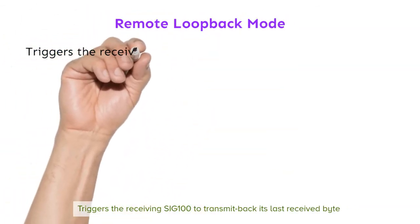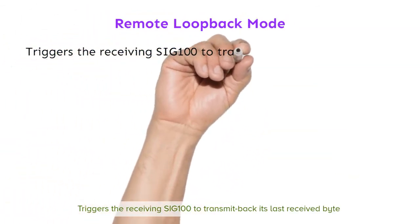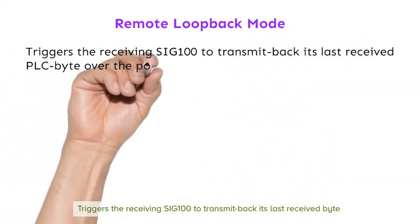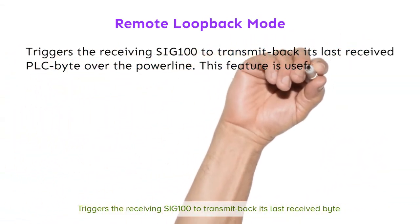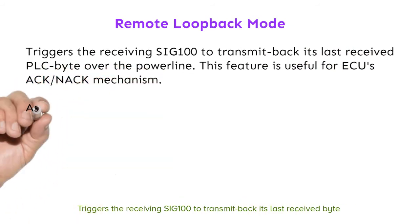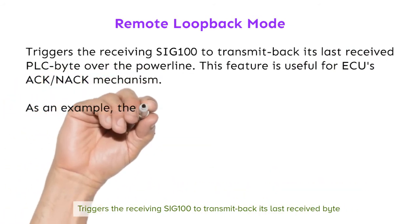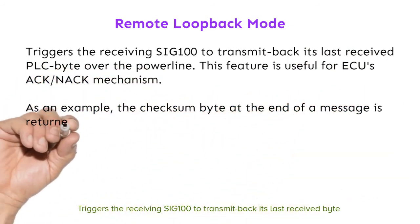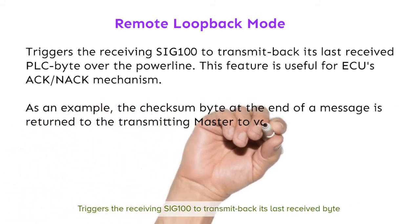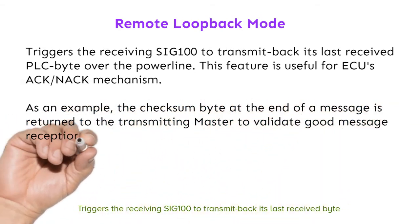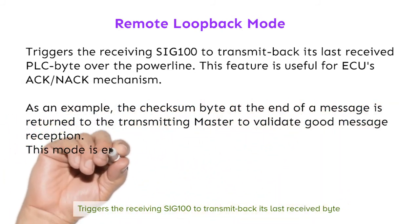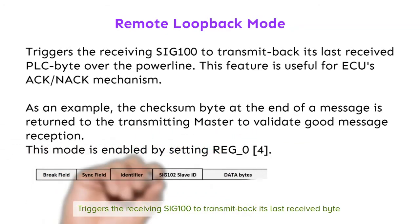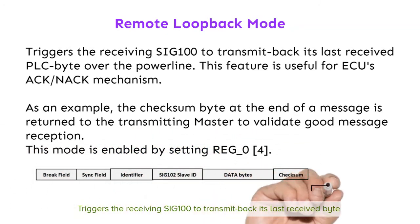Remote loopback mode triggers the receiving SIG100 to transmit back its last received PLC byte over the powerline. This feature is useful for an ECU's ACK/NAK mechanism. For example, the checksum byte at the end of a message is returned to the transmitting master to validate good message reception. This mode is enabled by setting REG0 bit 4.